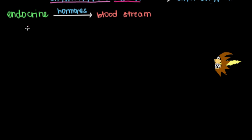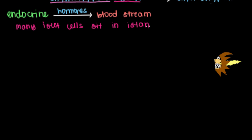The endocrine pancreas is organized with many islet cells — it's actually pronounced 'islet,' though I'm mispronouncing it just to show how it's spelled. These islet cells exist and sit in islands. There are three main types of islet cells we're going to talk about, and they're all present to some extent in each island or group of cells in the pancreas.